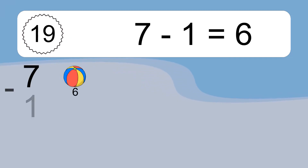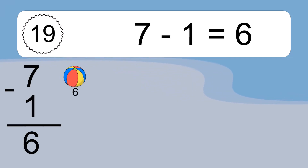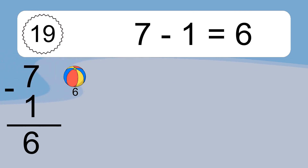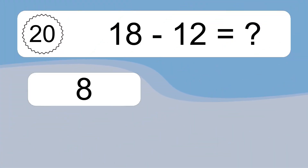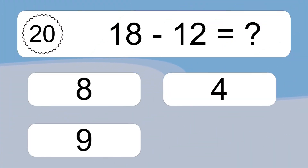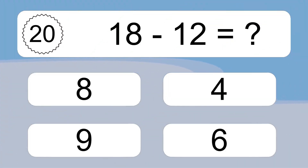7 minus 1 equals what? 7 minus 1 equals 6. Let's count it. 6.